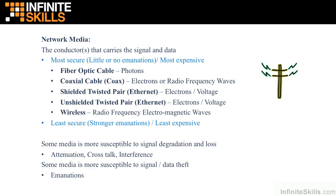Fiber optic cables use light pulses — actually photons — to carry the signal and data. In basic terms, when the light is on, that's a binary one; when the light is off, that's a binary zero. Photons do not produce emanations. Some later transmission media types use electrons to carry the data signal, and electrons have a phenomenon called emanation. But photons don't emanate, and as a result, fiber optic is considered the most secure.